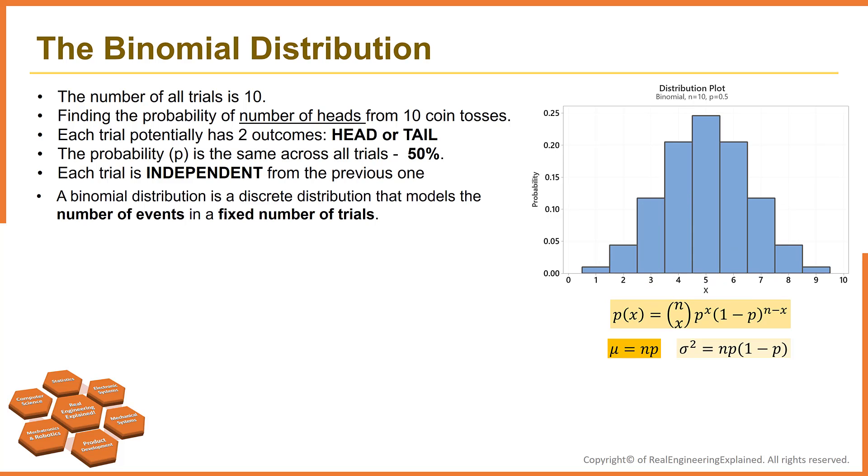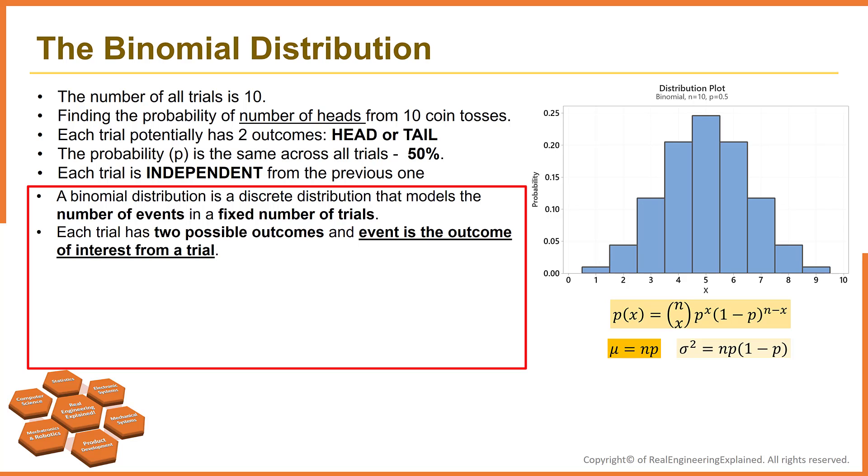Let's summarize what we have explained so far. A binomial distribution is a discrete distribution that models the number of events in a fixed number of trials. Each trial has two possible outcomes. An event is the outcome of interest from a trial. When the outcome of each trial is either a success or failure, the trials are called Bernoulli trials.